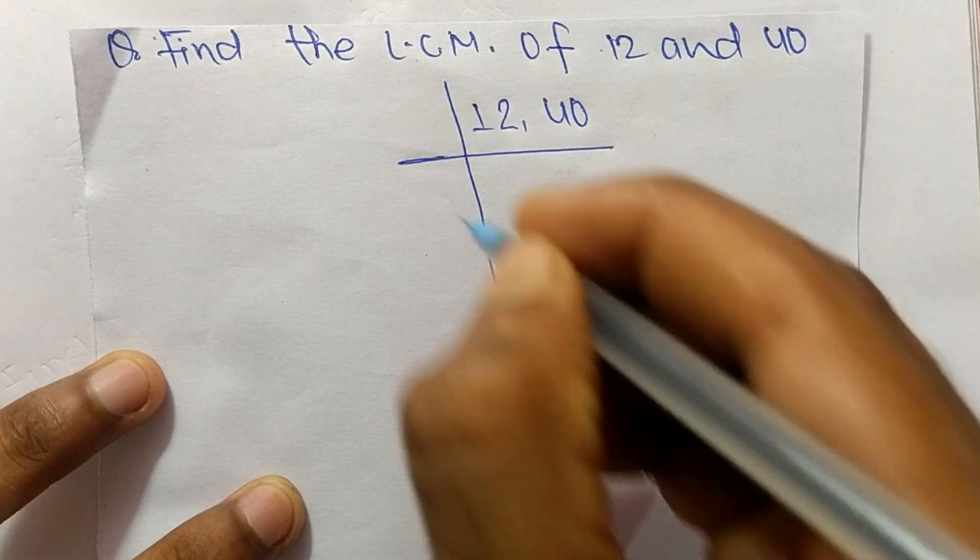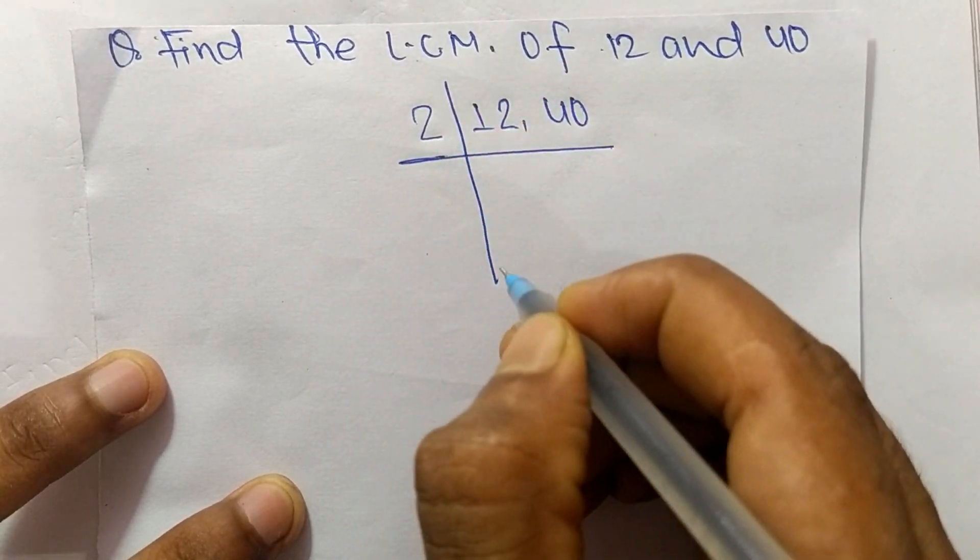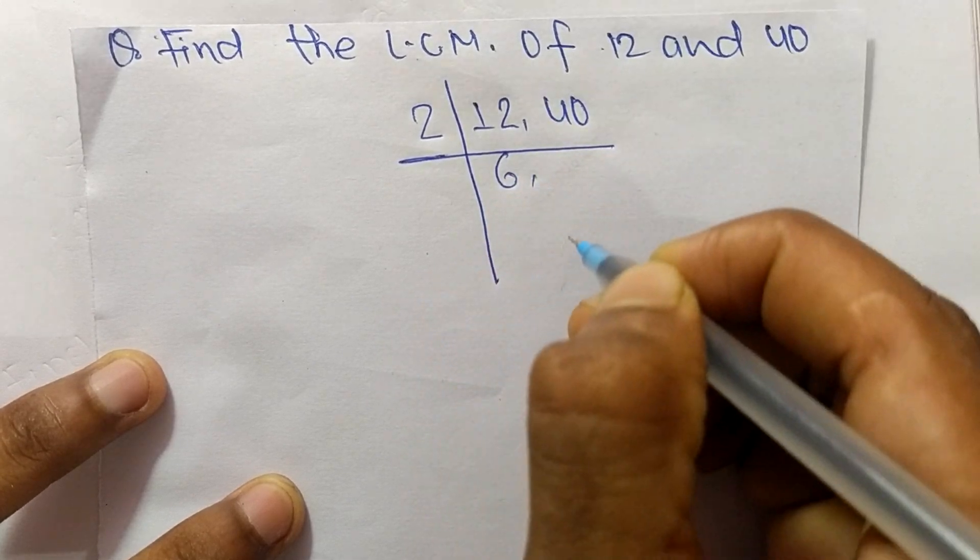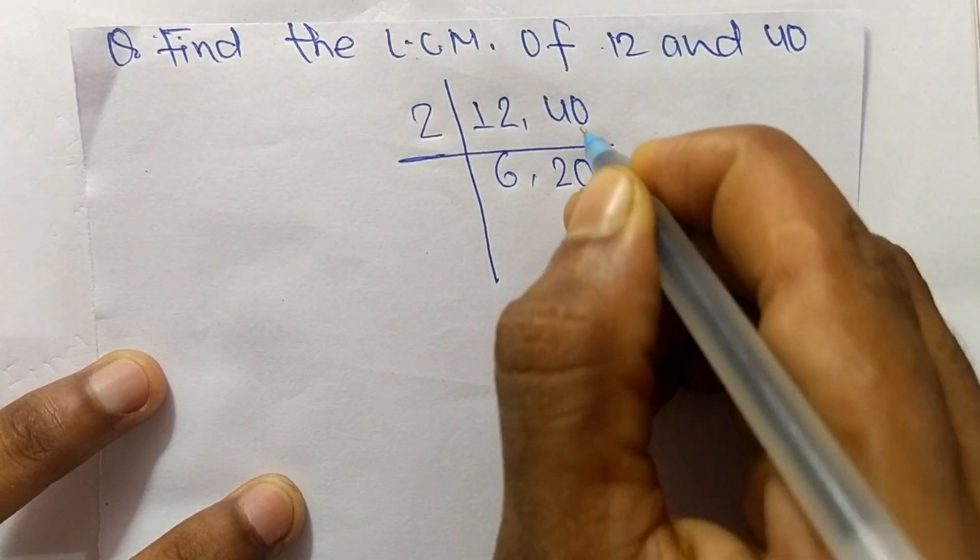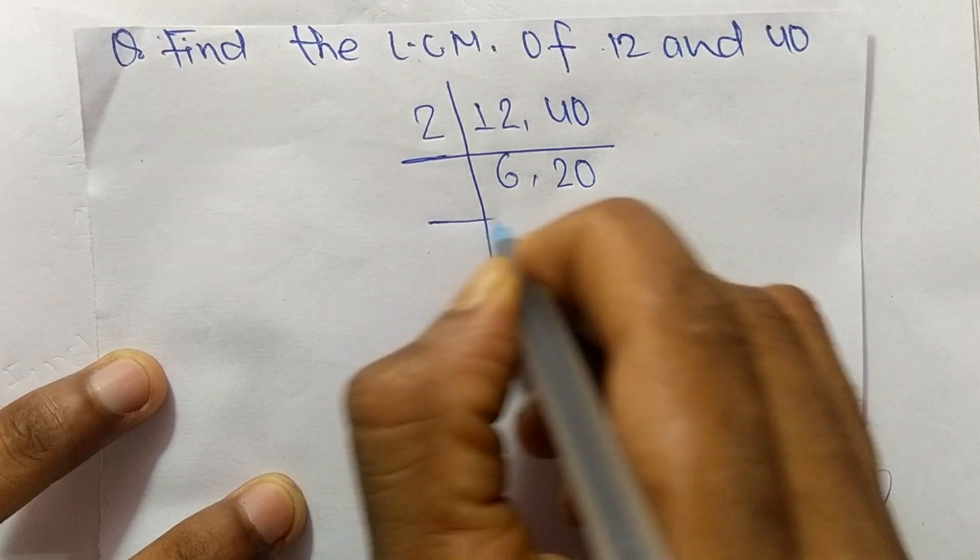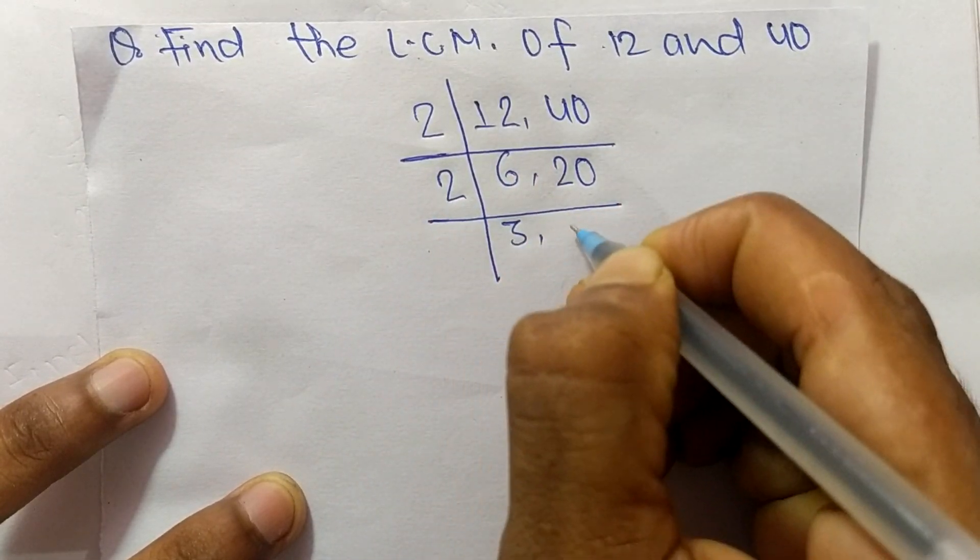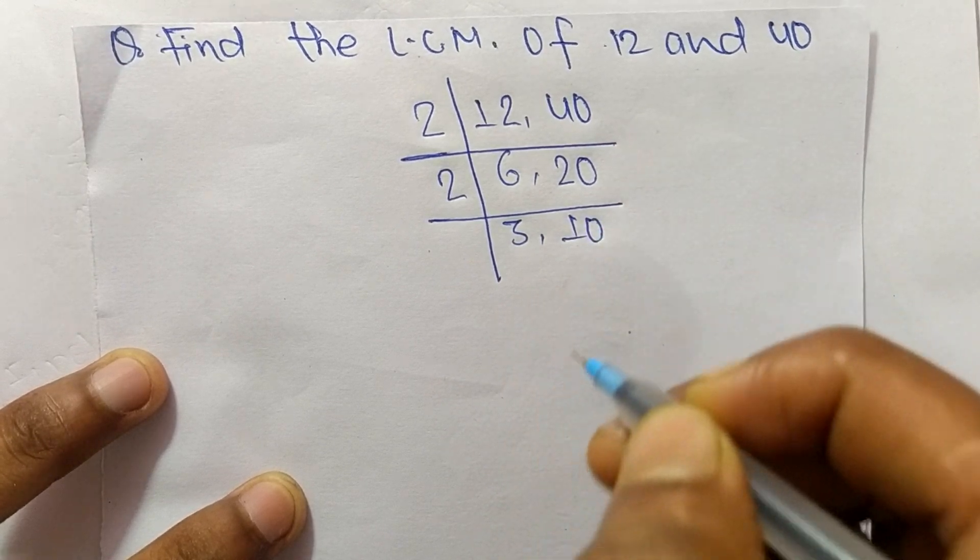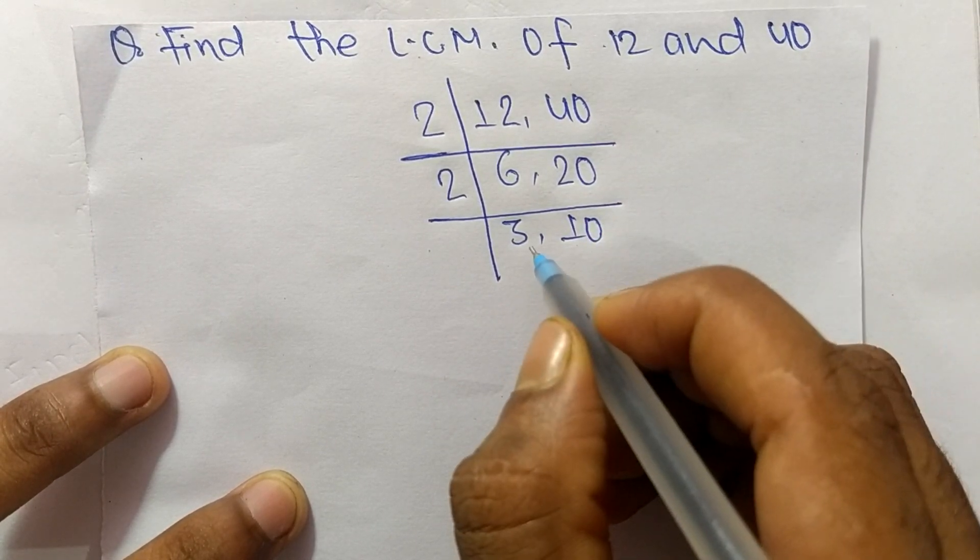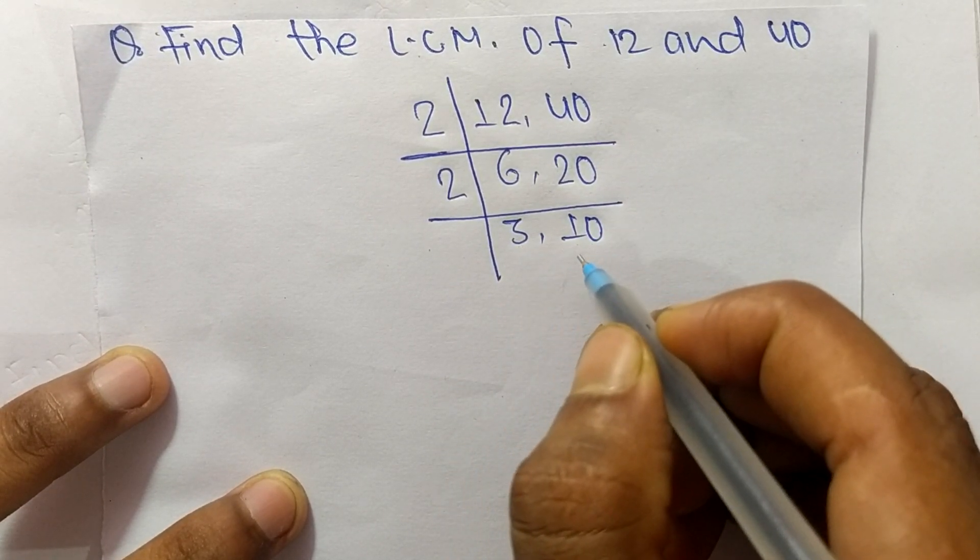So the number is 2. 2 times 6 means 12 and 2 times 20 means 40. Like as 2 times 3 means 6 and 2 times 10 means 20.